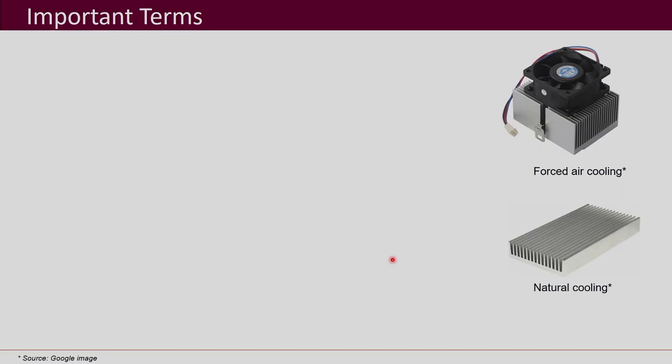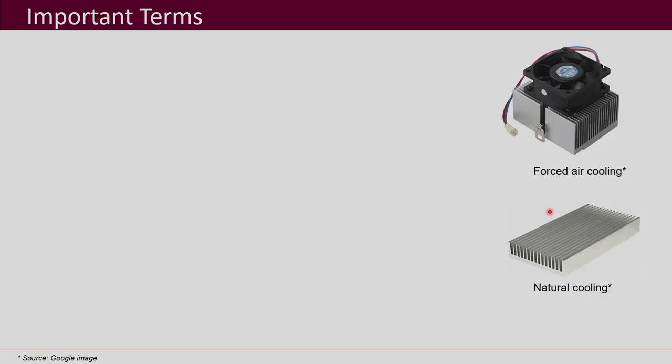Now let us look into how to choose the heat sink for thermal design. Thermal design means you have to cool down the device and choose the heat sink and cooling method — whether you want forced air cooling, liquid cooling, or natural cooling — and find a heat sink that can maintain temperatures below the maximum limits. We need to be familiar with the terms important for heat sink selection.